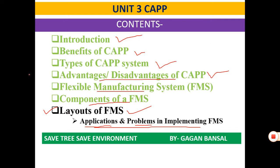In this unit we have covered these lectures in the previous sessions. So if you have any problem with Introduction to Computer Aided Process Planning, Benefits, Types, Advantages, Disadvantages, FMS, or Components of FMS, you can first revise those topics. We will be directly starting with Layouts of Flexible Manufacturing System.